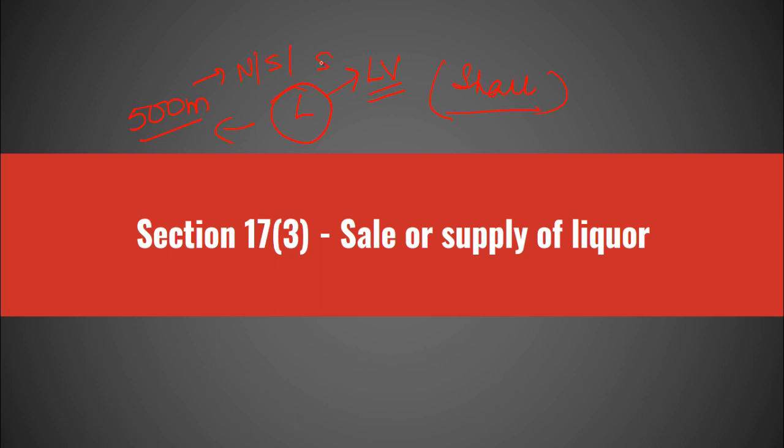Additionally, if any license is issued to a hotel or common drinking house for sale of liquor, it shall be deemed that the license has also been granted for supply of liquor, and for all relevant provisions of the act as well. So this is all about Section 17 subsection 3 — it deals with both sale and supply of liquor.